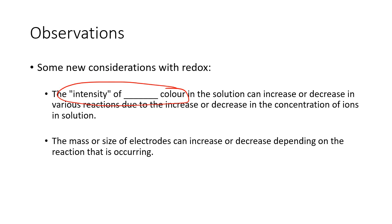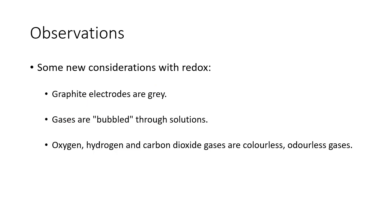Think about whether something is in excess or not. If you've got a colored ion and you react it with something that is in excess, you might use up all of the colored ions, making it go colorless. If the colored ions are in excess, only some are used and the color intensity will decrease. Also consider dilution or evaporation — color can get more pale or more intense. Graphite electrodes are gray. Gases are bubbled through solutions. Oxygen, hydrogen, and carbon dioxide gases are colorless and odorless.